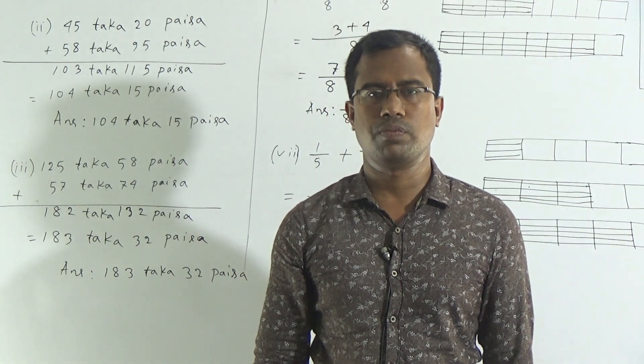Again, we know that 100 poisha is equal to 1 taka. So 100 poisha will be converted to 1 taka and added to the taka figure, making it 183 taka. Since we took 100 poisha from the poisha figure, it will be only 32 poisha. So the answer is 183 taka and 32 poisha.